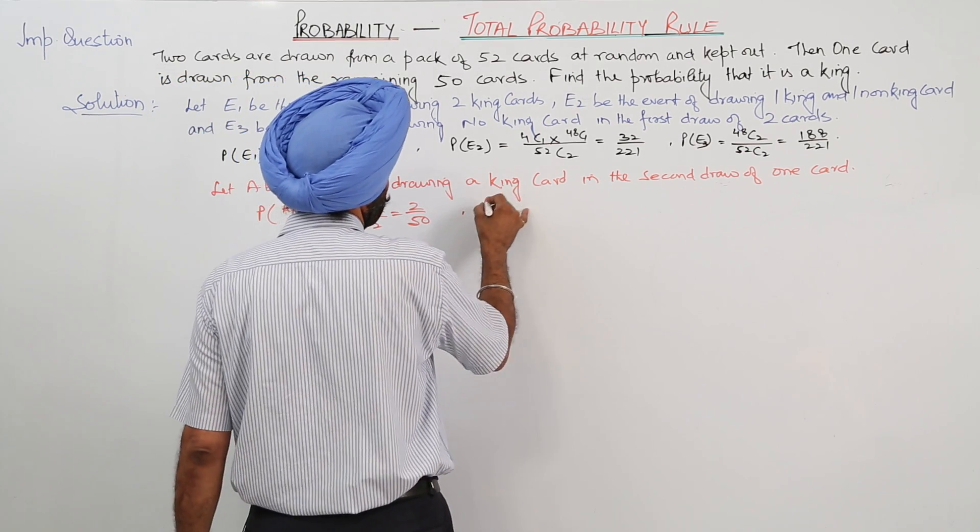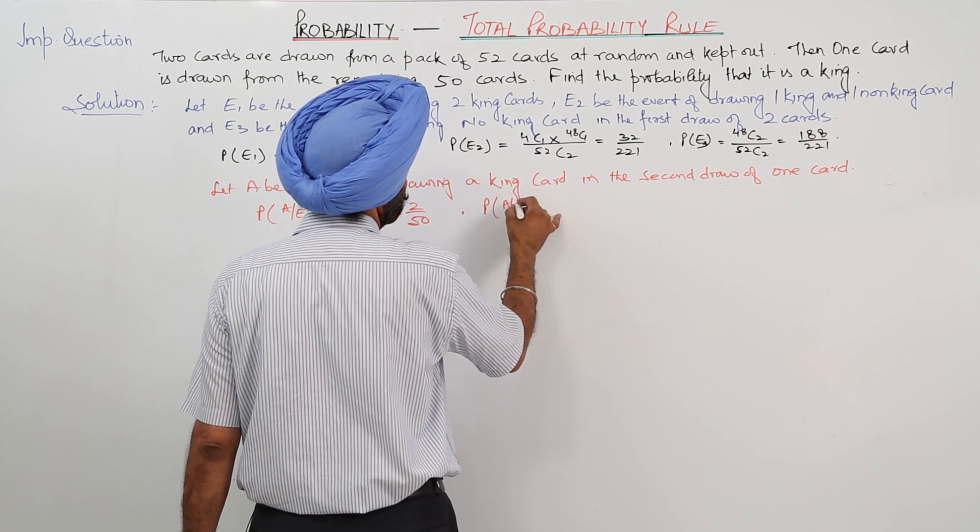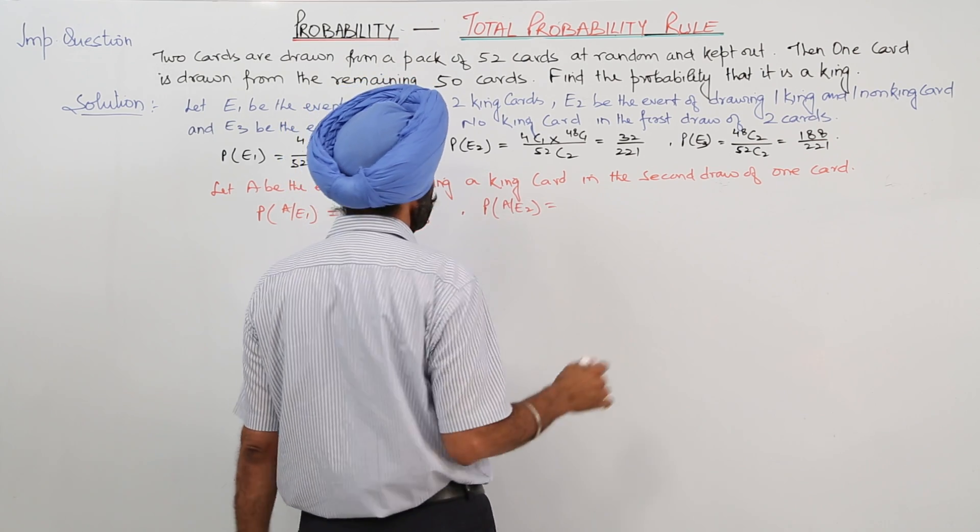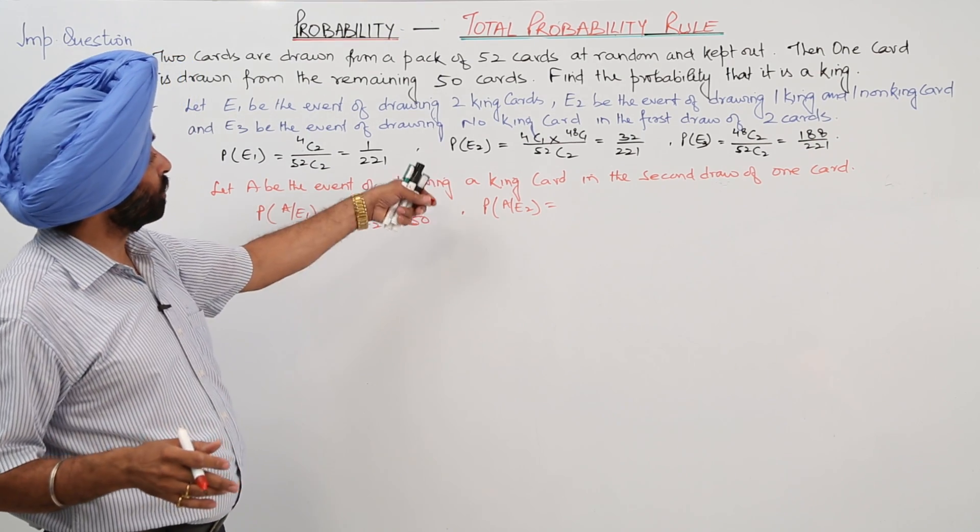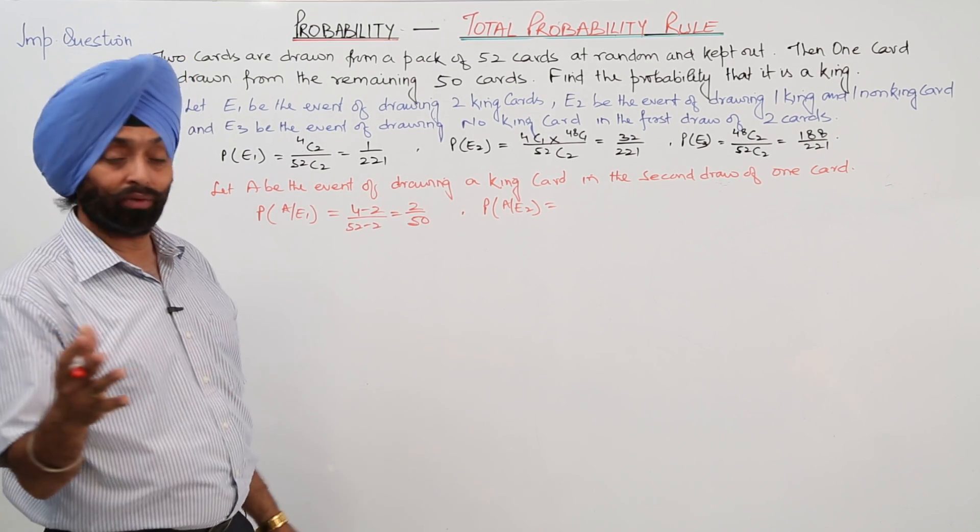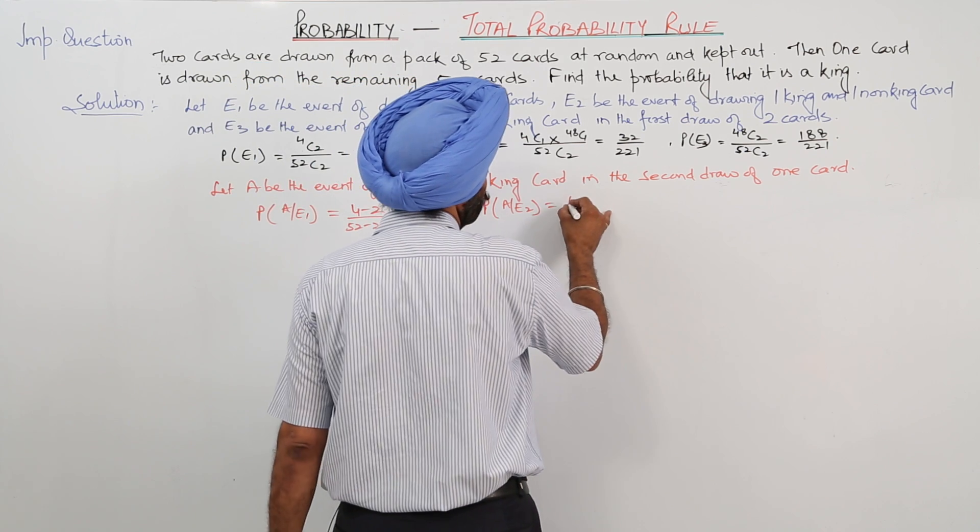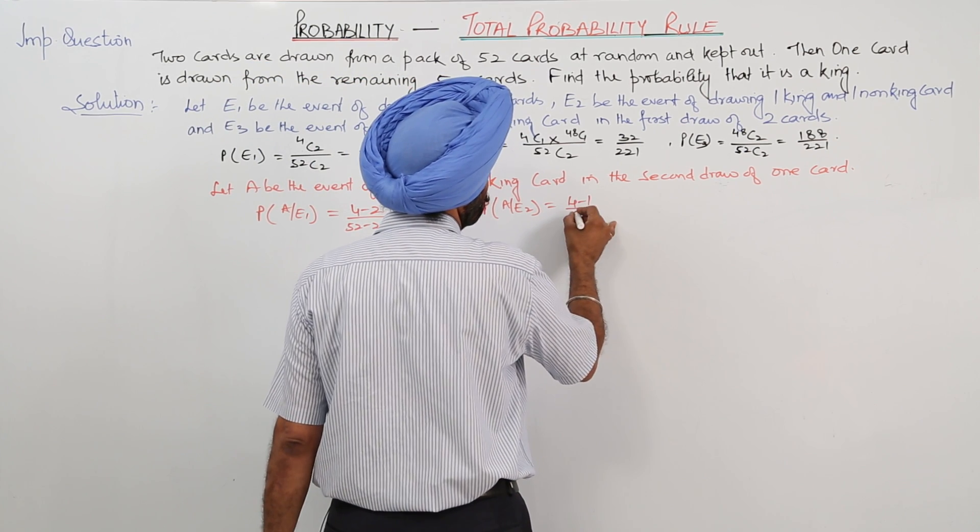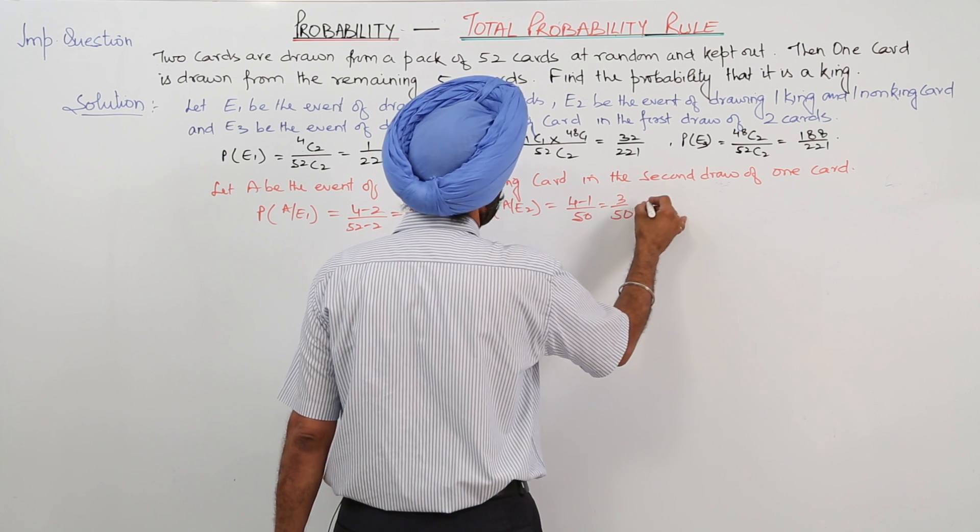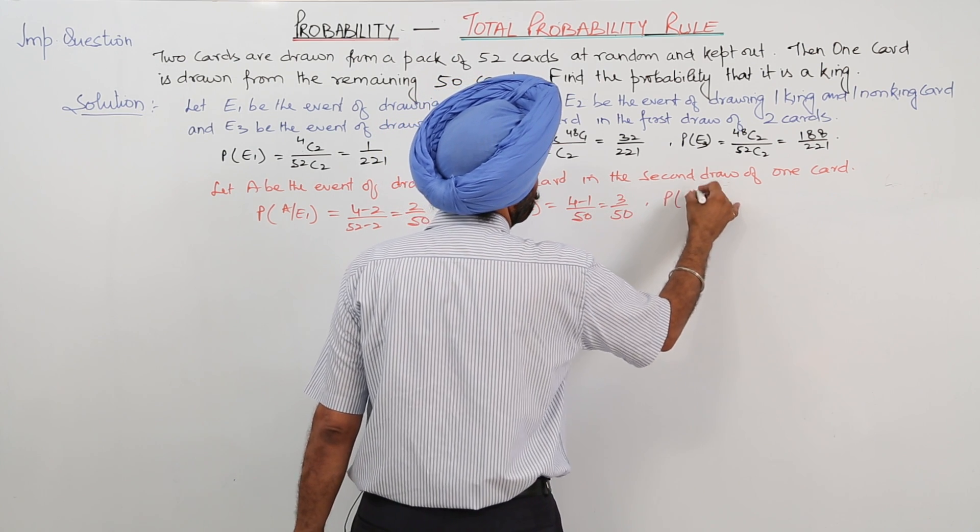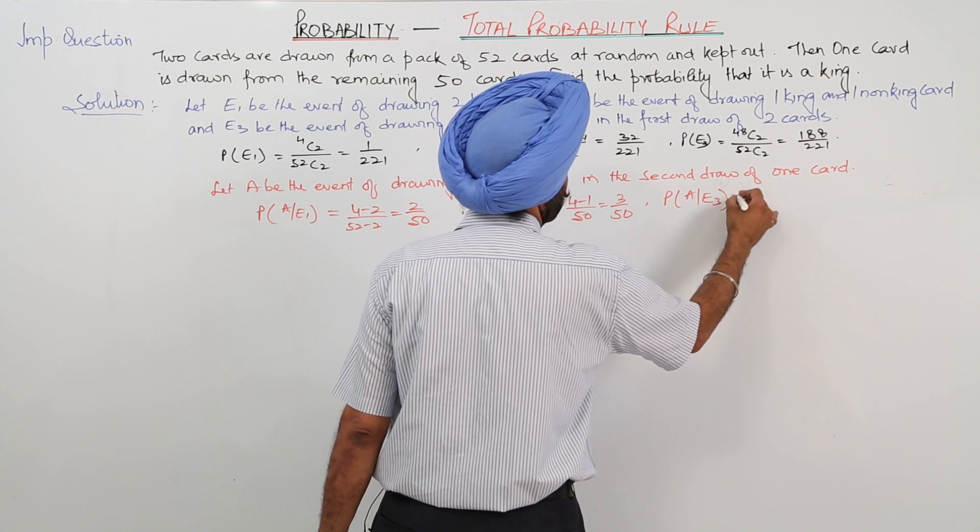Then probability for A oblique E2. Now we have to find probability for only king card, not for any other card. So in the second attempt what we were having? 1 king and 1 not a king. So 1 king already out, out of 50. So this is 3 upon 50.